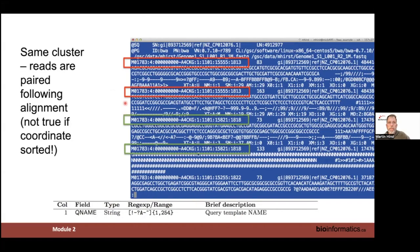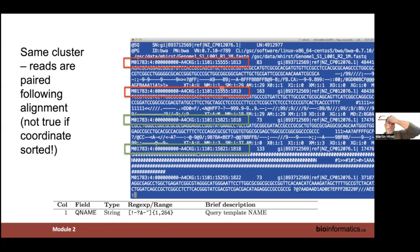The SAM file has 11 mandatory columns. Column 1 is the query name — the same string seen in the FASTQ file, with tile, lane, X and Y coordinates. Two reads sharing the same X/Y coordinate are paired. In BWA's primary output, reads are paired because re-pairing happens at the end of alignment. However, after coordinate sorting, read pairs may no longer be adjacent since they can span large distances.